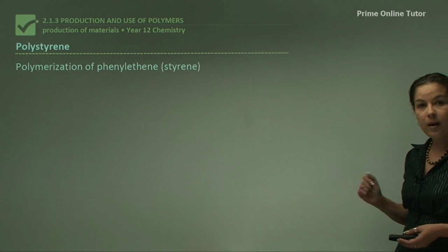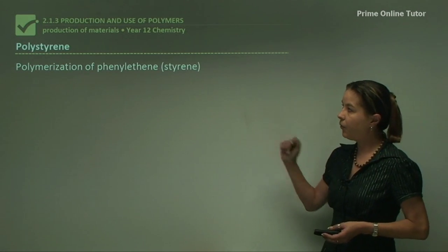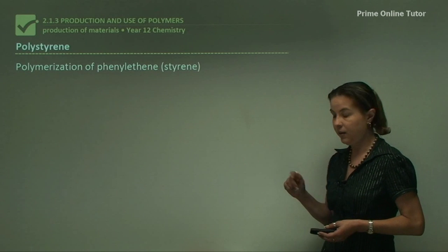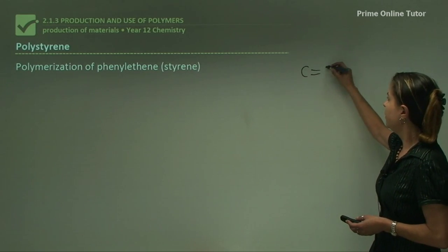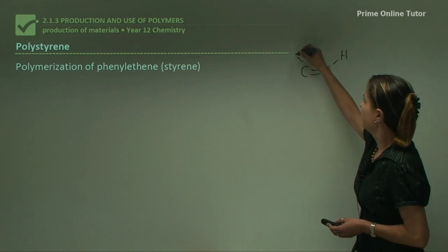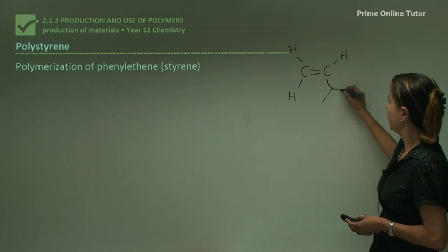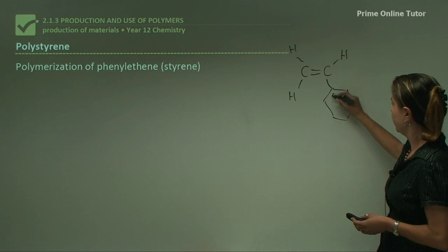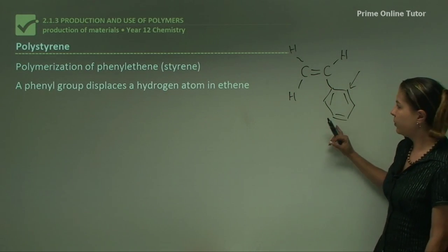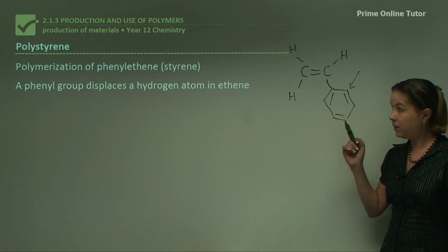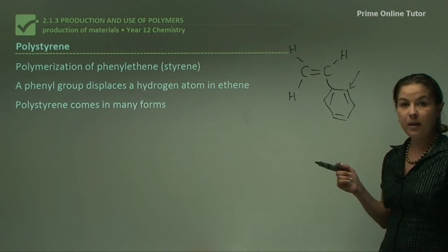Now on to our other polymer, polystyrene, which is made from the polymerization of phenylethene, or styrene. Looking at the structure, the phenyl group displaces the hydrogen atom in ethene, and polystyrene comes in many forms.